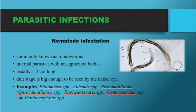Nematode infestation, commonly known as roundworms. These are internal parasites with unsegmented bodies, usually 1 to 2 cm long — adult stages are large enough to be seen by the naked eye. Examples include Philometra species, Anisakis species, Procamallanus species, Spirocamallanus species, Raphidascaris species, Contraecum species, and Echinocephalus species.